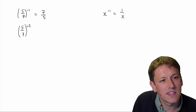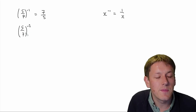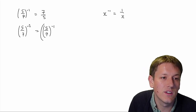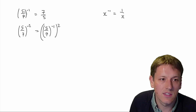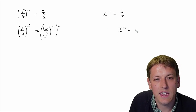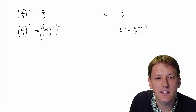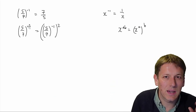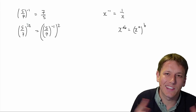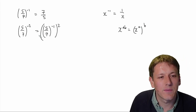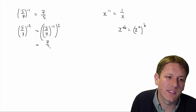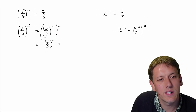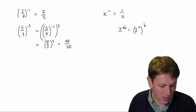We can extend this idea to other powers including negatives: 5 sevenths to the minus 2. I can write that as 5 sevenths to the minus 1, all squared — using the same rule that X to the A times B is X to the A, all to the B. So I do 5 over 7 to the minus 1, which is 7 fifths. And then working through the brackets, 7 fifths squared gives 49 over 25.